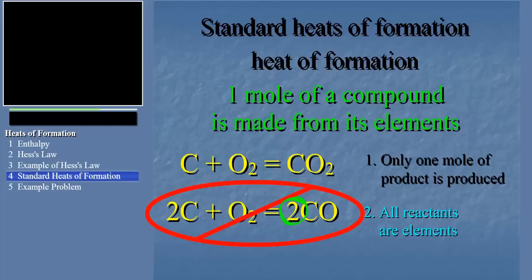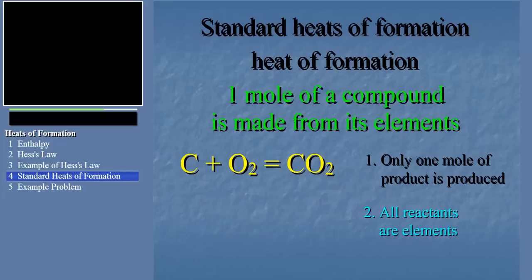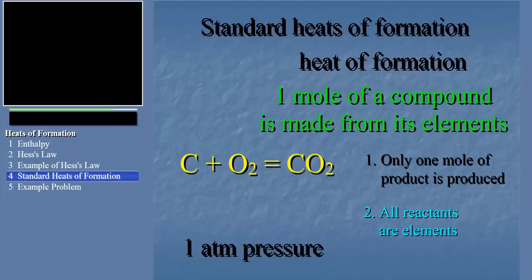Now, for the delta H for this reaction to be a standard heat of formation, each reactant and product would have to be present at one atmospheric pressure, referring specifically to the gases. The symbol for the standard heat of formation, then, is delta H0 sub F. And I bet you can guess what that F stands for.